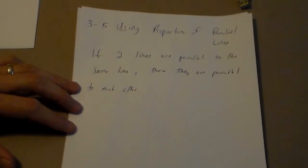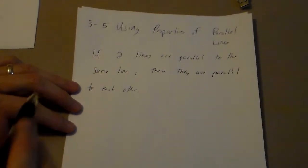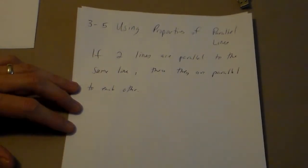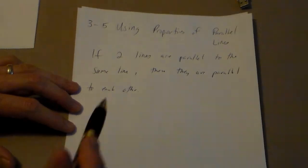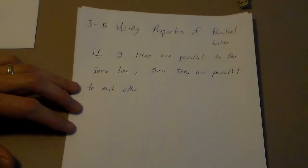But it's similar to transitive because in transitive, if you have two things that are equal to the same thing, then they are equal to each other. Here, we're saying if two lines are parallel to the same line, then the two lines are parallel to each other.